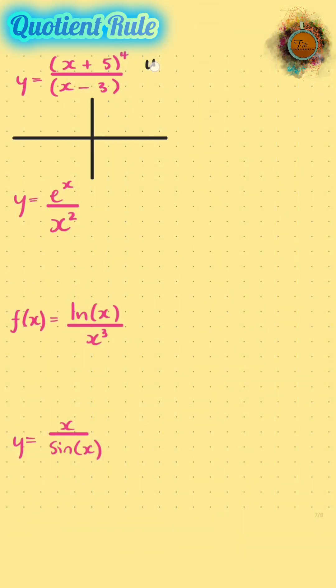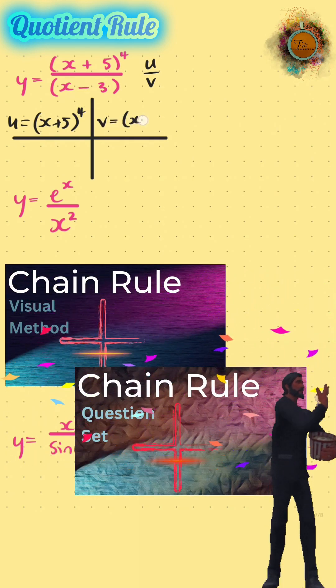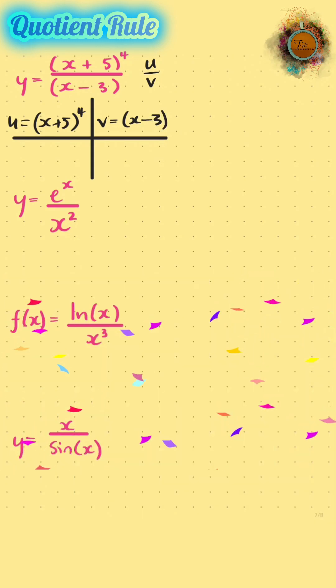Start by drawing our grid and we remind ourselves that it's u over v. U is equal to x plus 5 to the power of 4. If you haven't already seen my previous video on how to do the chain rule, I think you're going to need to see that one first. We're about to do it in our head.